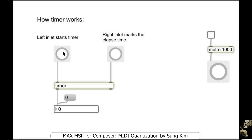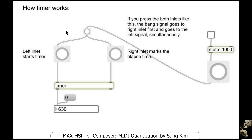This process is based on the timer object. The left inlet starts the timer and the right inlet marks the elapsed time. If you press both inlets at the same time, the signal goes to the right inlet first and then to the left inlet. As a result, it calculates the elapsed time between each click.